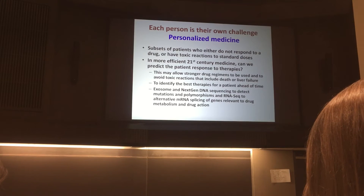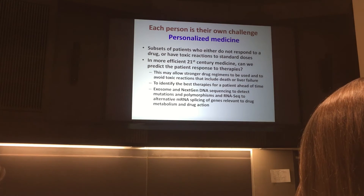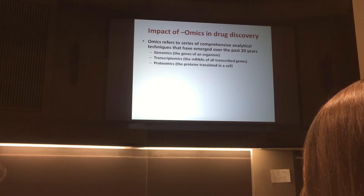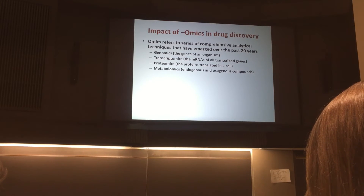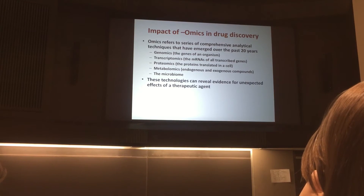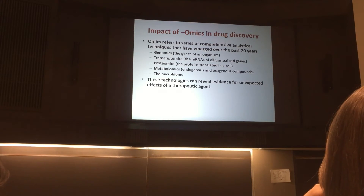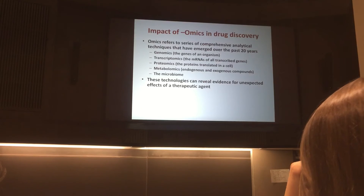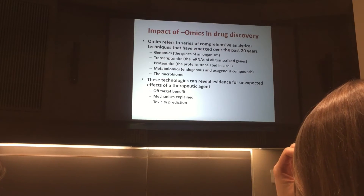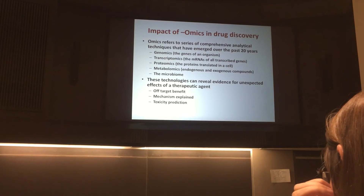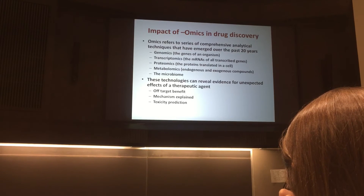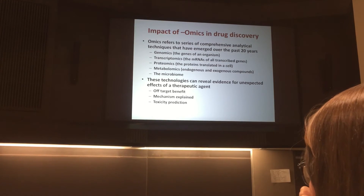There are all sorts of methods for doing this. A variety of types of technologies — genomics, transcriptomics, proteomics, and metabolomics, the latter being what I'm working on — plus the microbiome. By understanding all of these things, we can maybe understand the particular problems that a person might have. This knowledge will sometimes explain why a drug is working somewhere we didn't expect, explain exactly how the drug is working, and perhaps allow us to predict toxicity.